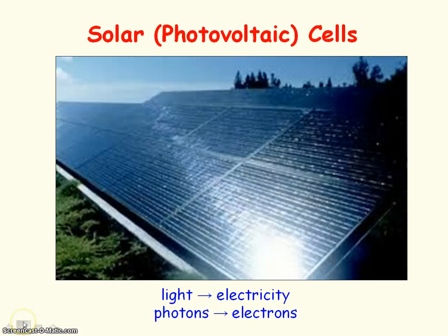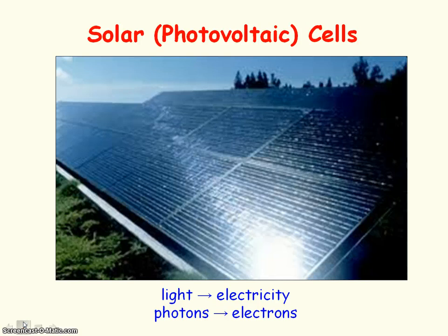Solar cells rely on the photoelectric effect to convert light energy into electrical energy, where photons hit the solar cells, electrons are emitted, and these electrons can be used to create electricity.